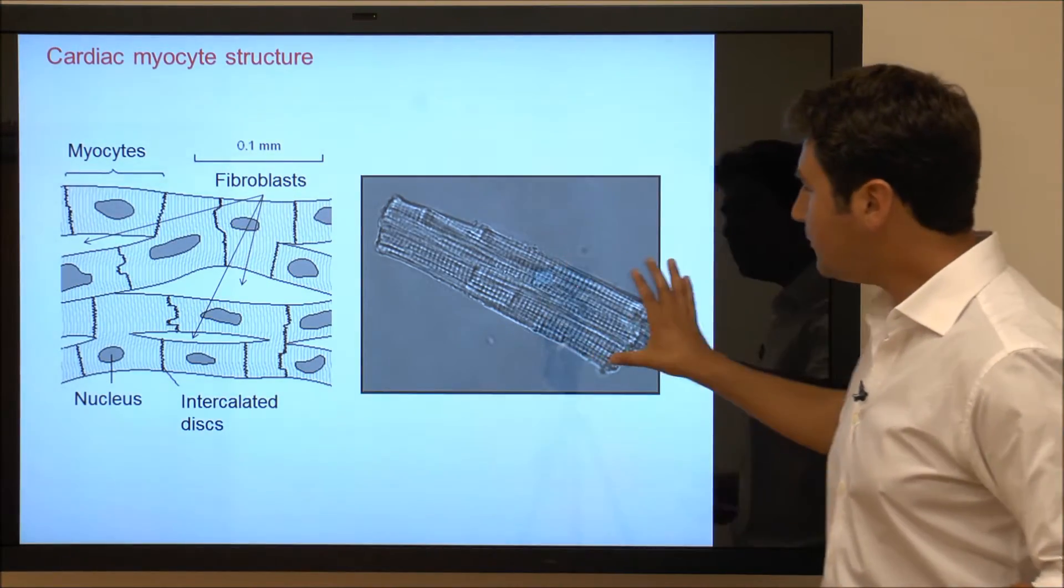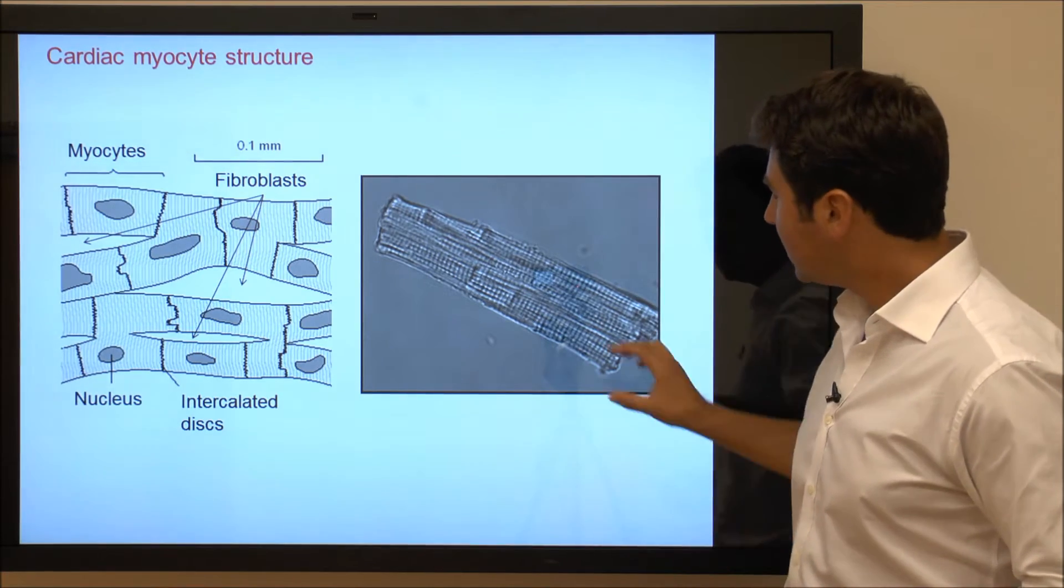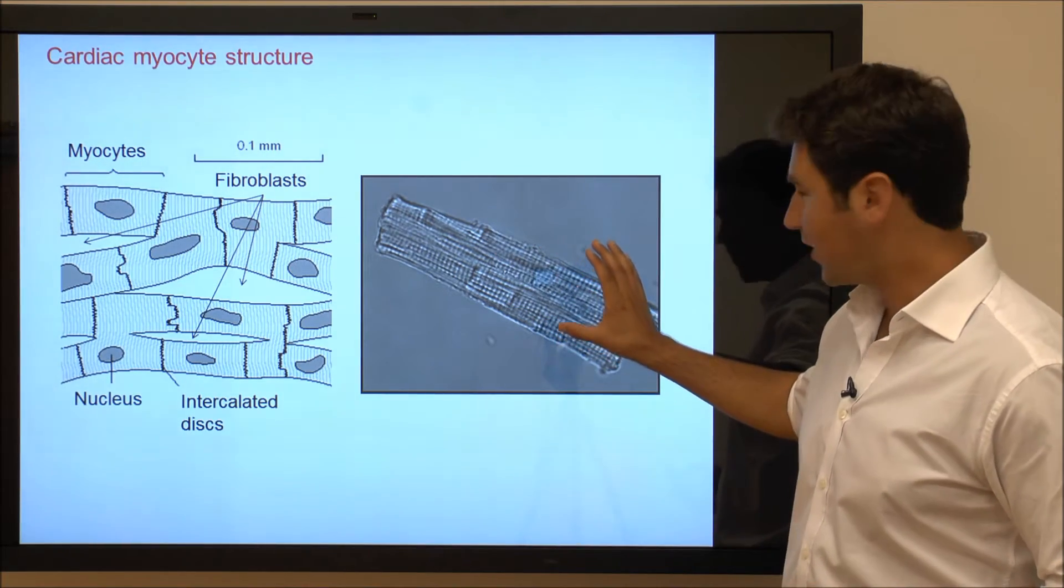So if we then look at a single isolated cardiac myocyte, we end up with a rather beautiful looking structure.